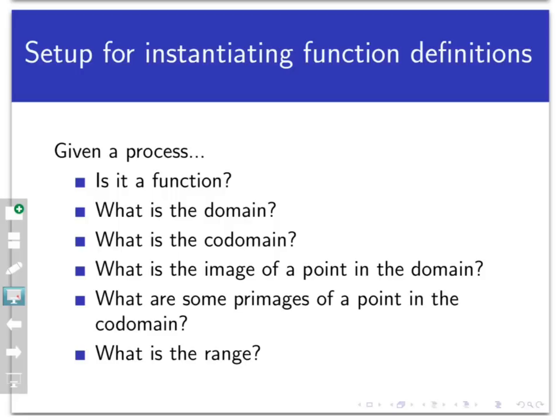Third, what is its codomain? Then we're going to pick some points out of the domain and see what their images are. Then we're going to pick some points out of the codomain and see if they have preimages, and if so, what are they? And then finally we're going to ask what's the range. And I encourage you to take these same six questions and apply them to all sorts of different processes of your own making.